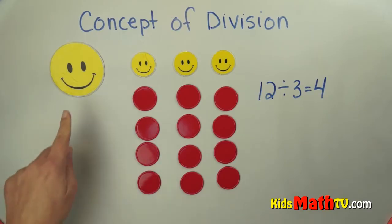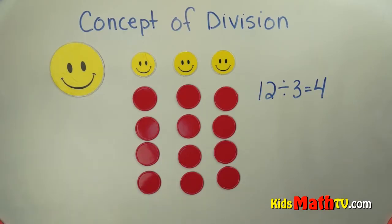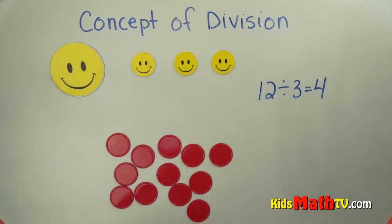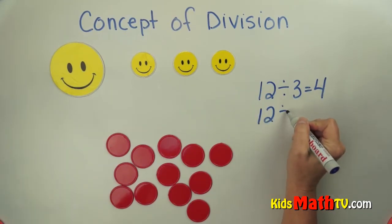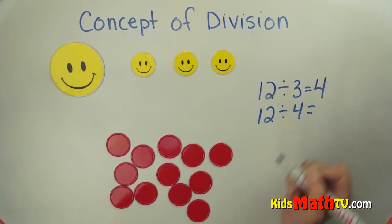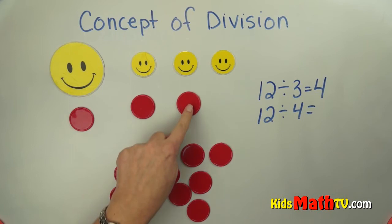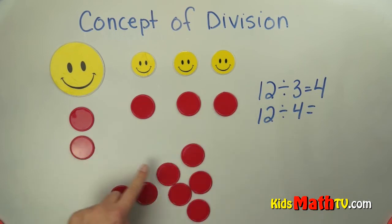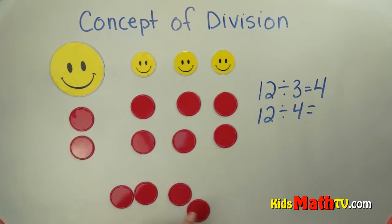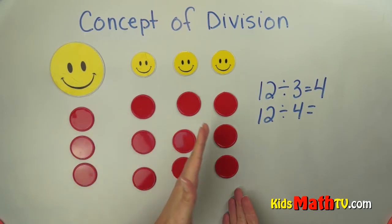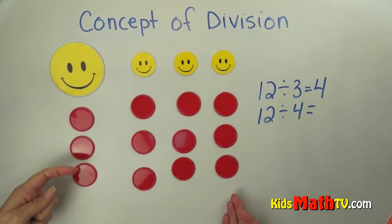Now let's say that Zippy wanted some candy as well. So we still have the 12 candies here, but this time we're going to divide it into 4 groups. So we have 12 divided by 4 — how many will be in each group? Zippy gets 1 and the brothers each get 1, and we repeat until all candies are distributed.